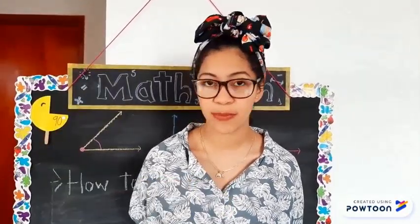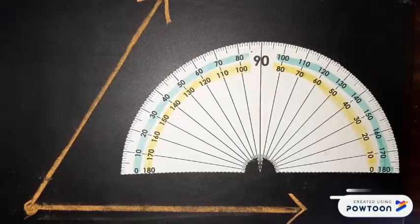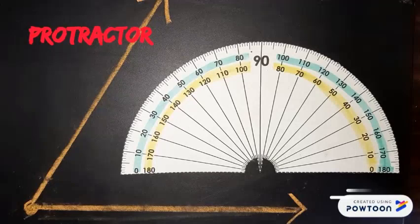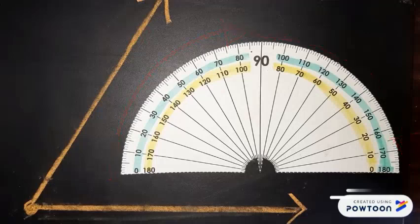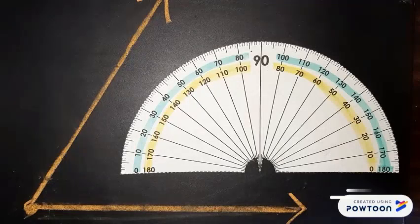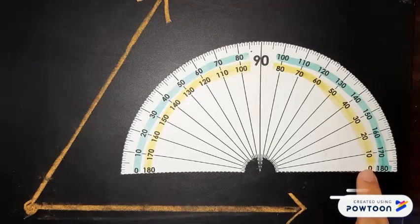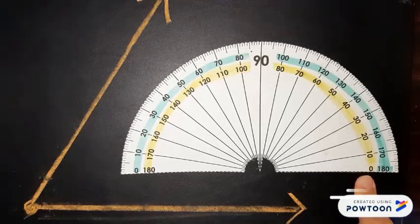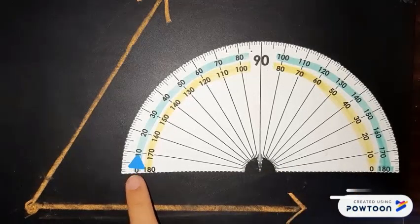So how do we use a protractor? To measure angles there are some things that you need to know about a protractor. As you can see, it is a semicircle divided into equal parts, and each part marks a degree. Also, it has two rows of numbers. The lower row begins here from zero, and the top row begins here at zero.